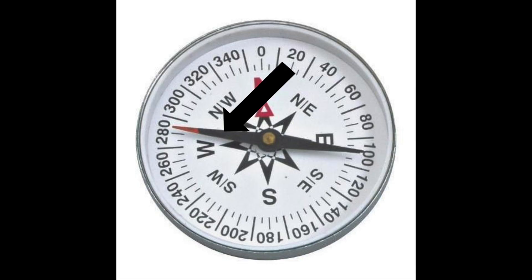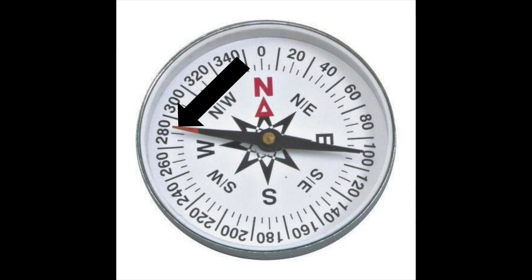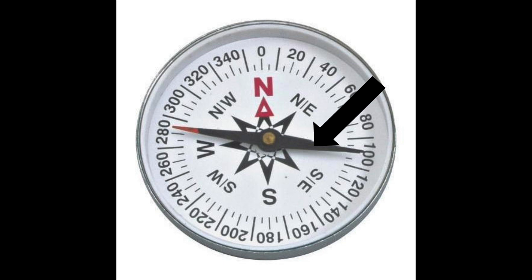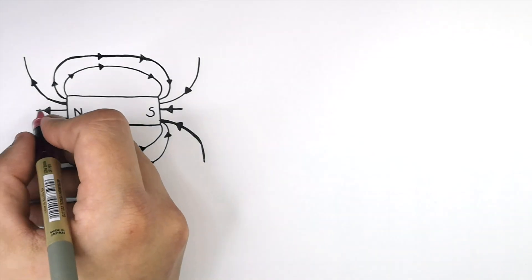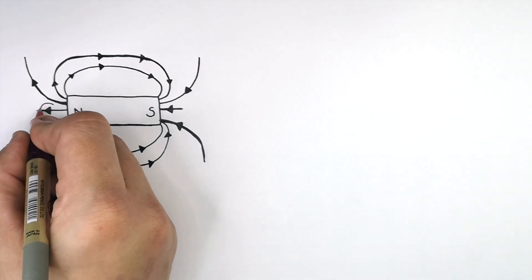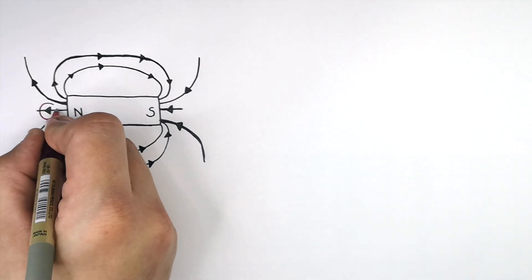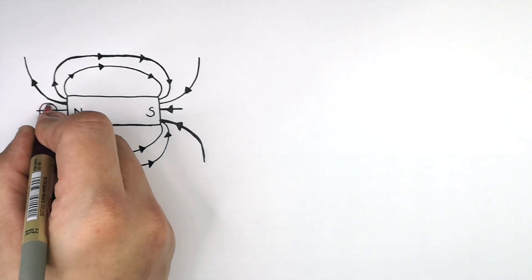Inside a compass like the one here, you can see a bar magnet with a north pole and a south pole. If you place the compass inside the magnetic field of another magnet, the compass will point away from north toward south in the direction of the magnetic field lines. By placing a compass into a magnetic field, you can see the direction of the magnetic field lines.